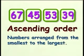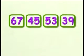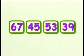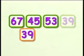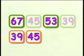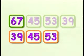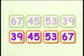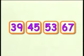Arrange these numbers in ascending order: 67, 34, 53, 39. The smallest is 39. Next is 45. After that would be 53. And the last number is 67. So the order is 39, 45, 53, 67.